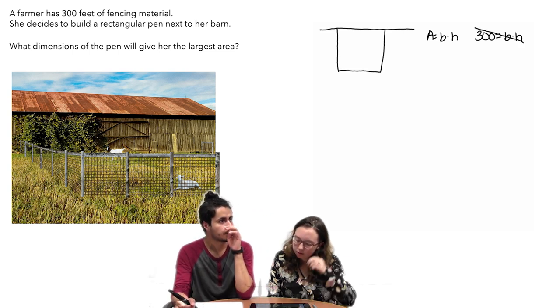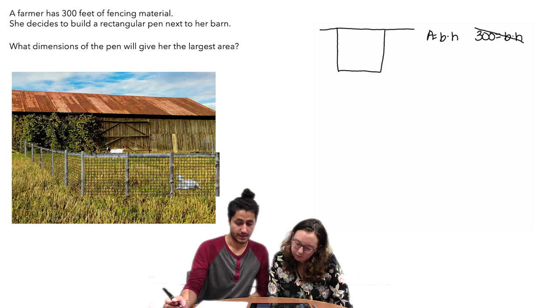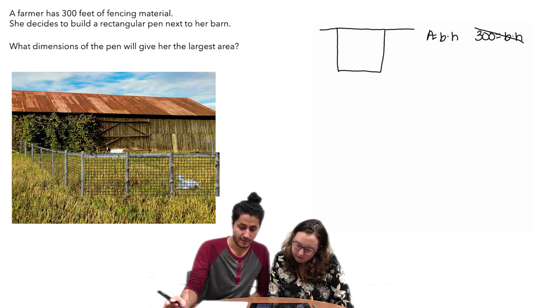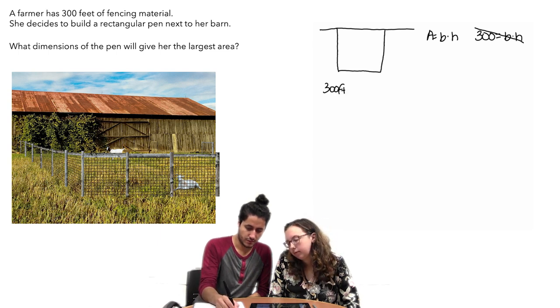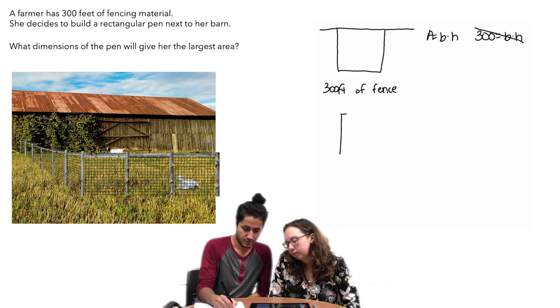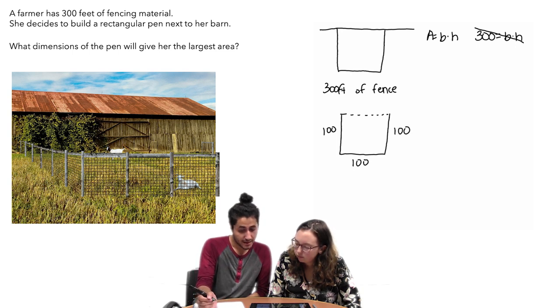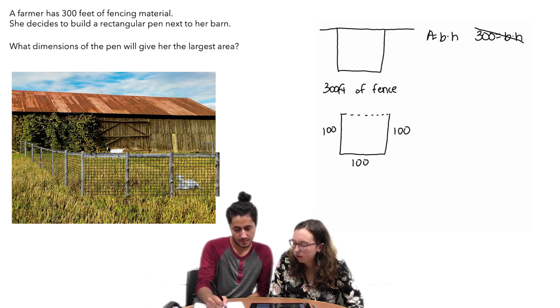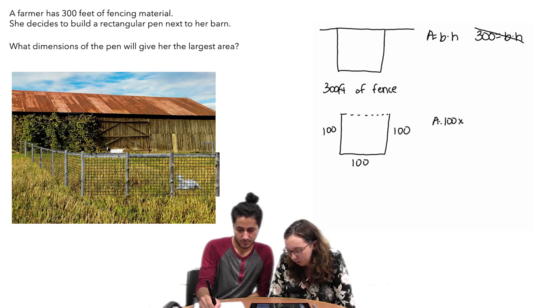Okay, so then what if we have 300 feet of fence? What if we did 100, 100, 100? Would that help us out? Like splitting it up evenly? Yeah, so that'd be area equals 100 feet times 100 feet.